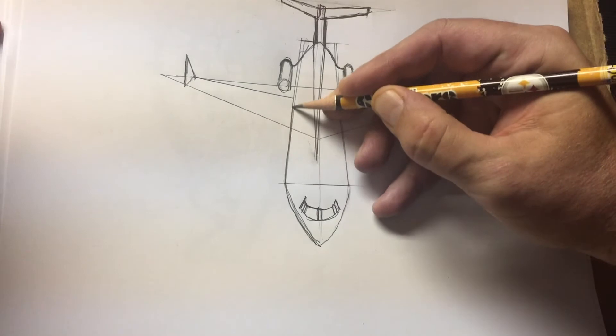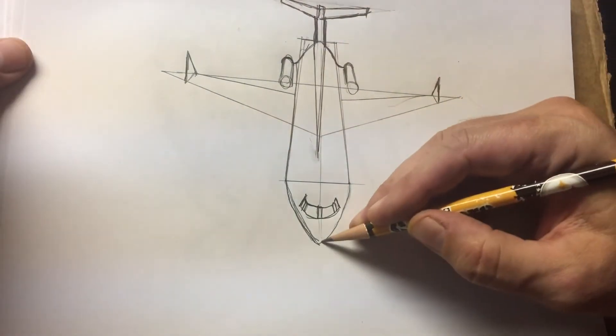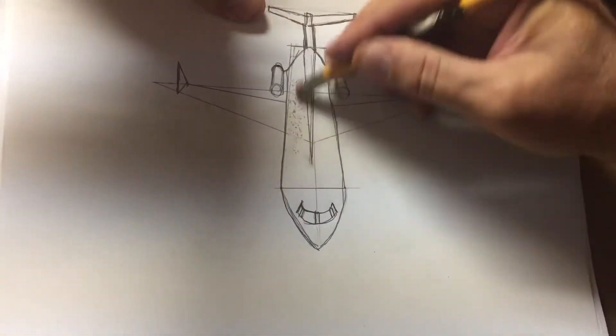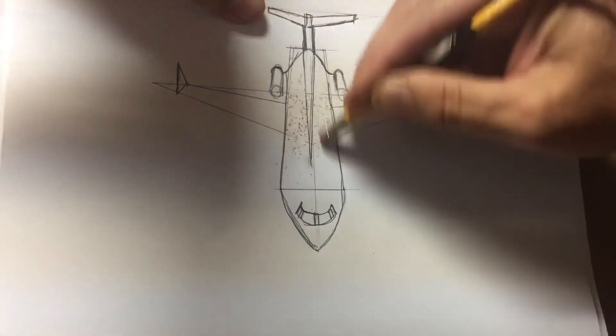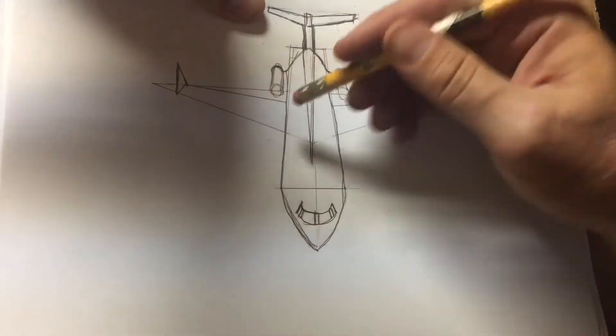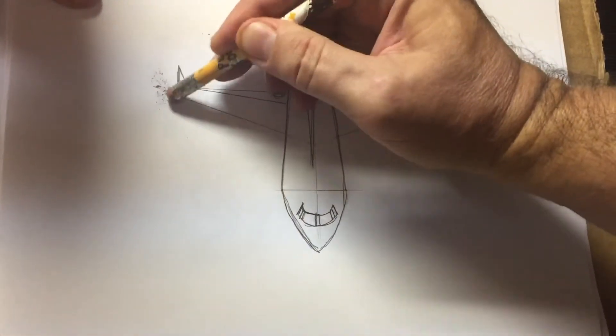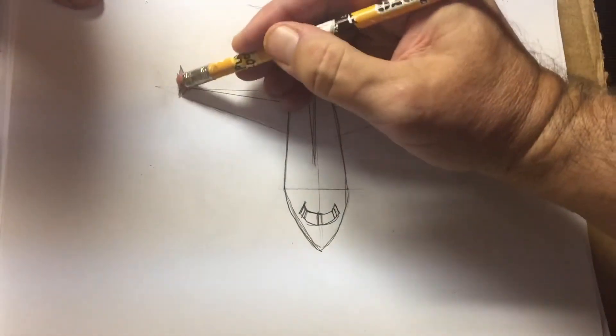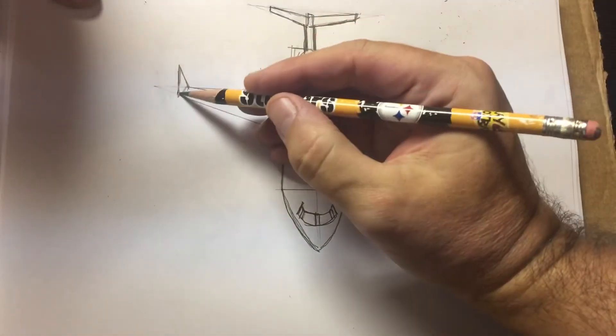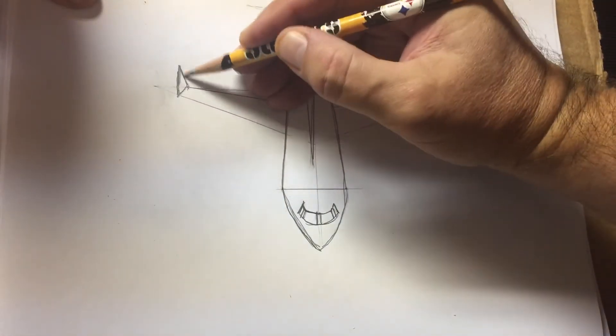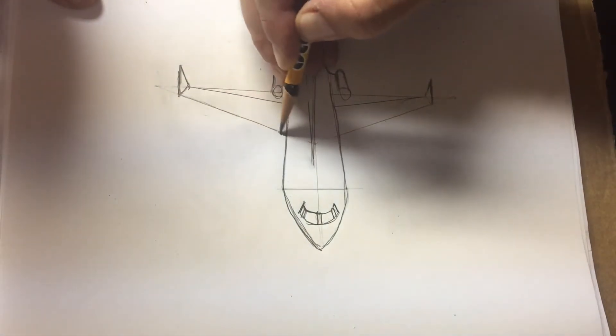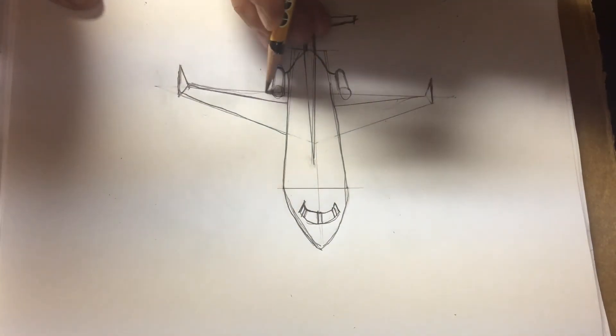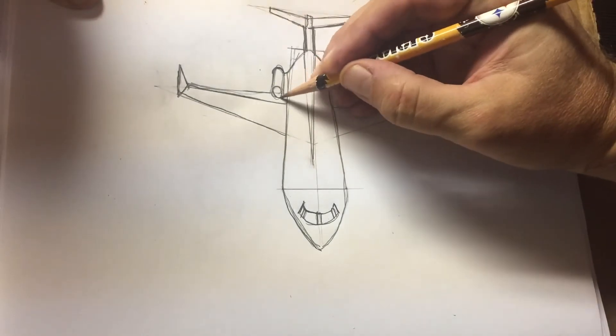Let's start rounding out the front, all the way to the back. Take out some of these extra lines. Now the Gulfstream is a small jet, seats about 19 people. Take out some of these extra lines, and then trace the lines you like. You can use a ruler if you want. I like to freehand.